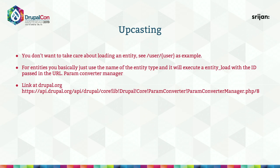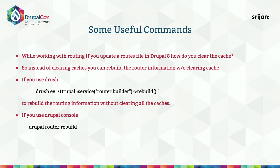This mechanism is known as upcasting — refer to the link on screen for more details. One thing to note: while trying these things on a local machine, some changes may not reflect immediately due to caching. To rebuild router information without clearing all caches, use these commands: with Drush, use 'drush entity-updates' or the Drupal service route builder rebuild; with Drupal Console, use 'drupal router:rebuild'.